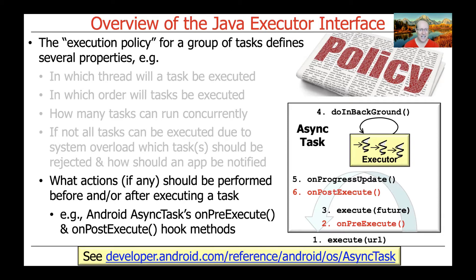Another interesting question is: what actions, if any, should be performed by the framework before and/or after executing a task? In the Java framework model, there isn't much control over this unless you build it yourself. If you use Android, earlier versions had the AsyncTask framework, which has hook methods called onPreExecute and onPostExecute. These hooks run before the task starts in a background thread and after it finishes, giving a chance to interact with the user interface, which must run in the main UI thread.